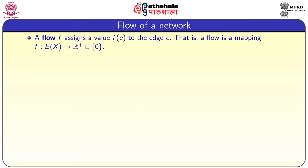Flow of a network: a flow f assigns a value f(e) to each directed edge. That is, flow is a mapping f from the edge set of X to R-plus union 0, that is non-negative real numbers.